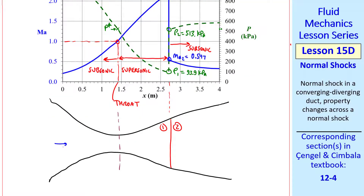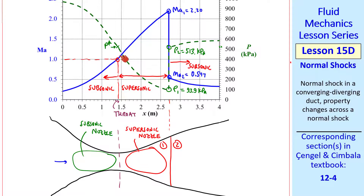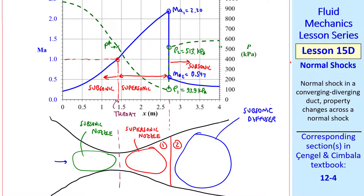I sketch the nozzle with the shock. The converging region is a subsonic nozzle: Mach number increases and pressure decreases. The diverging region before the shock is a supersonic nozzle: Mach number keeps increasing and pressure keeps decreasing. But once we go across the shock, the flow is subsonic, so we have a subsonic diffuser. Since it's a diverging duct, pressure rises downstream of the shock and Mach number decreases downstream of the shock.